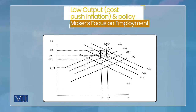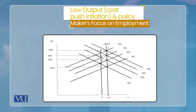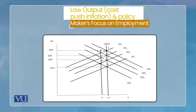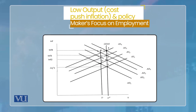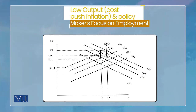Jab AD2 peh shift hoga to economy point two peh long run equilibrium peh aayegi — inflation rate aur badh gaya, lekin economic activity apne level peh wapas aa gayi. Lekin agar yeh spiral chalta rahe — AS2, AS3, AD2, AD3 — to ultimately point four peh economic activity to apne potential level peh wapas aa gayi, lekin inflation ka target miss ho gaya: jo INF1 tha, inflation INF4 peh chala gaya. Matlab: cost-push inflation ho aur central bank real variable ka target achieve karne ki koshish kare, to economy mein inflation aa jata hai.